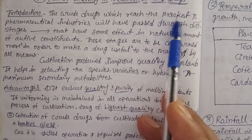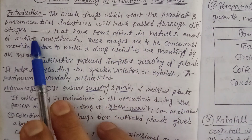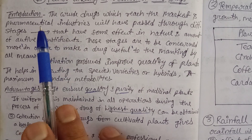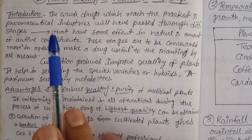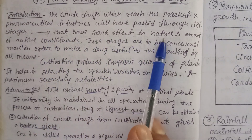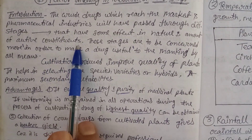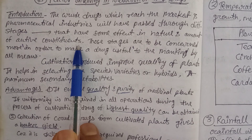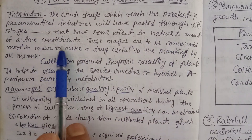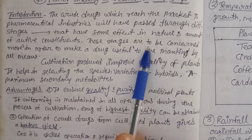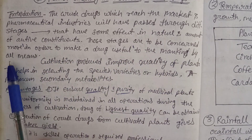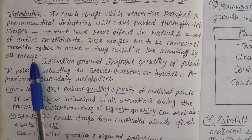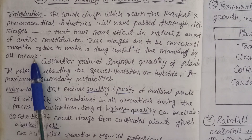In introduction, crude drugs which reach the market and pharmaceutical industry will have passed through different stages. From the cultivating source, the drug may go through storage, drying, cleaning, and other steps that have a small effect on the nature and amount of active constituents. During storage, it will definitely affect the nature of the crude drugs and the amount of active constituents. These stages are to be managed carefully, because ultimately the intention is to produce the drug for therapeutic purpose, so the therapeutic property should remain the same.